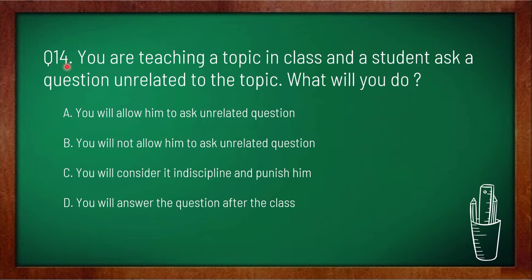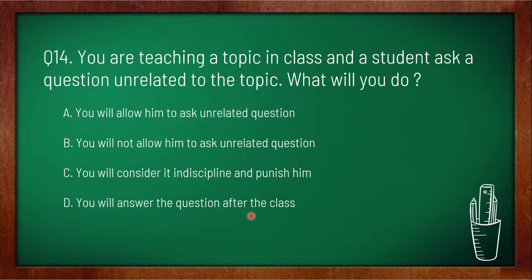Question 14: you are teaching a topic in class and a student asks a question unrelated to the topic — what will you do? Option A: allow him to ask unrelated questions, option B: not allow him to ask unrelated questions, option C: consider it indiscipline and punish him, option D: answer the question after the class. Option D is correct — you will answer the question after the class.